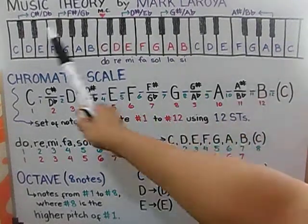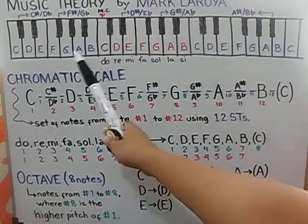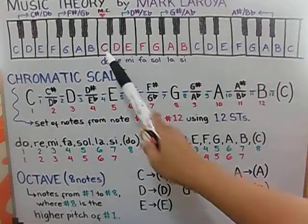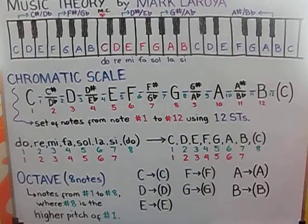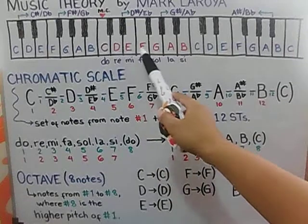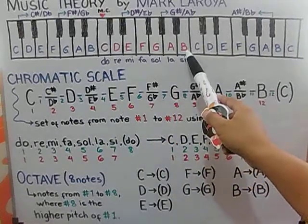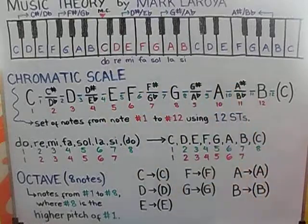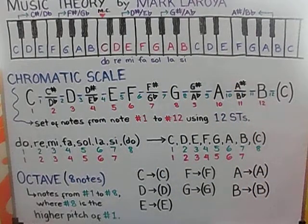If you notice in the structure of the piano or keyboard, we have 7 different keys, white keys. And these are C, D, E, F, G, A, B. Then followed by C again. So basically, there are only 7 major white keys.